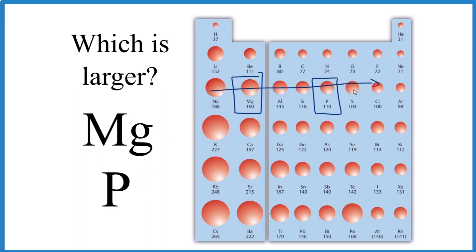So as we go across a period on the periodic table, you can see that the atomic radii decreases. So magnesium and phosphorus, since we're going across the same period, phosphorus is going to be smaller. That means magnesium is the larger atom.